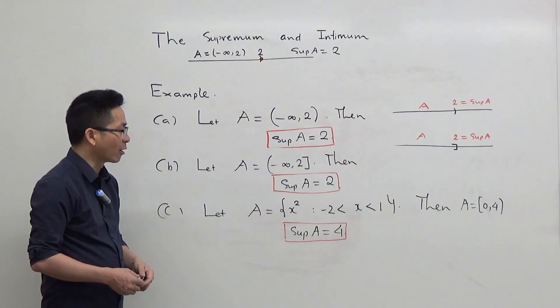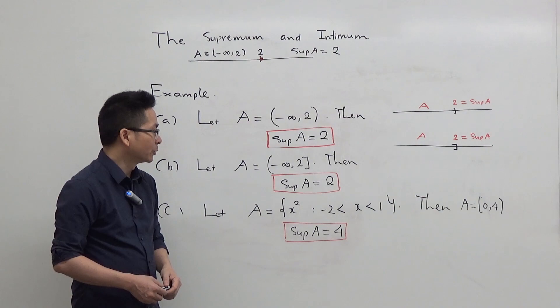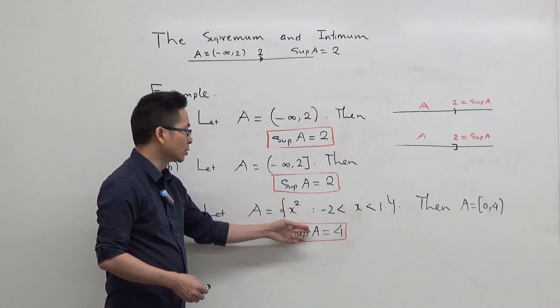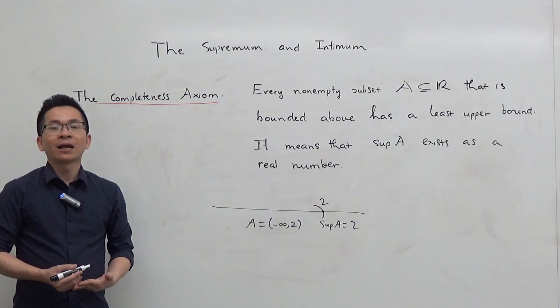Now, in the third example, A is the set of all real numbers of the form where x is strictly greater than minus 2 and less than 1. We can easily see that A is in fact the interval 0 to 4, where 4 is excluded. And from the definition, we can see that the supremum of A is 4.